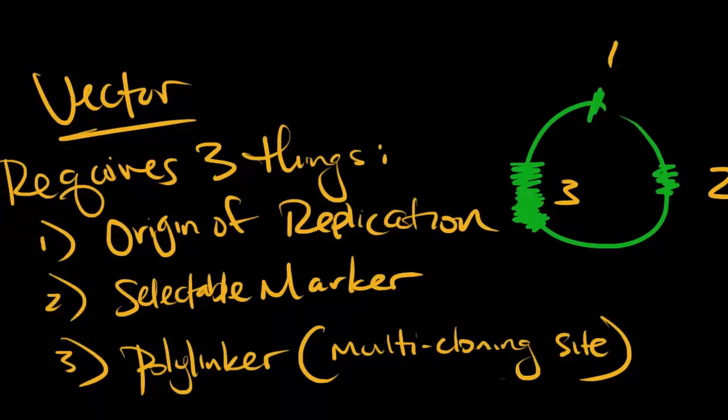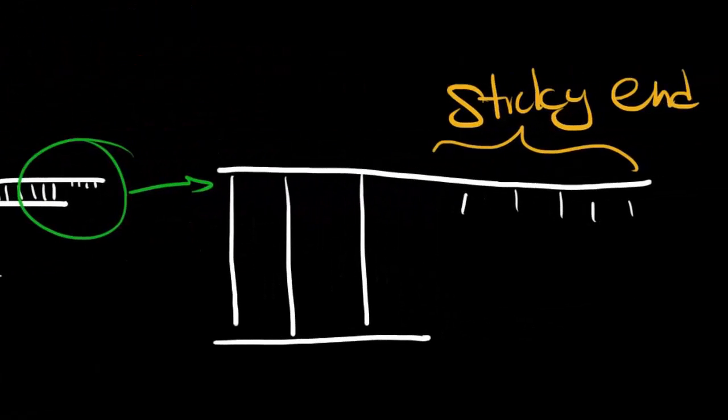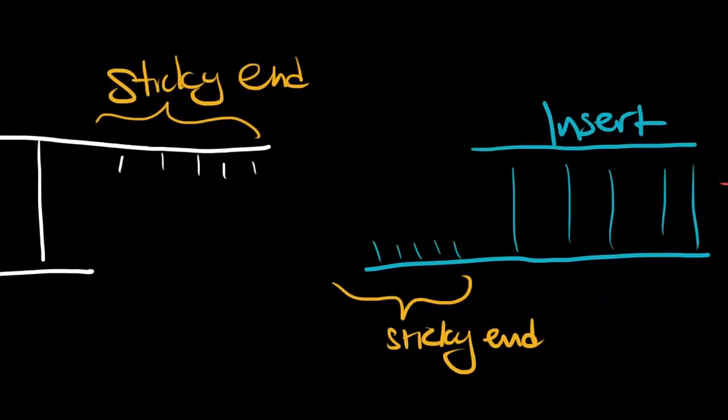Histones, being a protein, are made up of amino acids. Because its purpose is to be wrapped by DNA, and because DNA is negatively charged, histones have a lot of basic amino acids. Do you remember which three amino acids are basic?